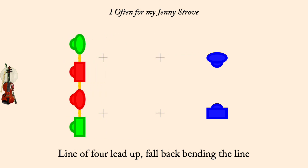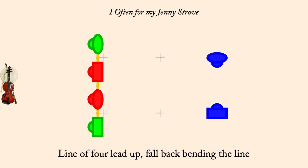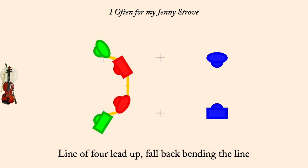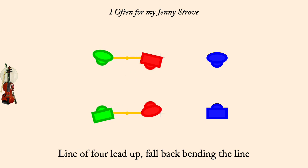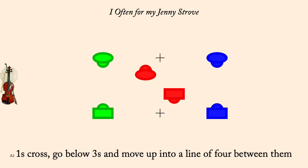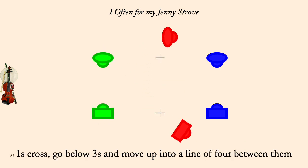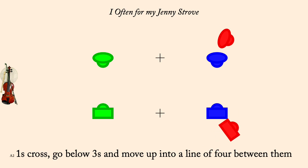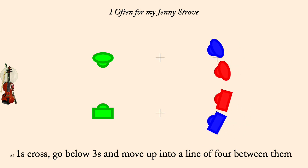Ones cross, go below threes, come up and form a line of four between them. Line of four, up a double, fall back, bending the line.